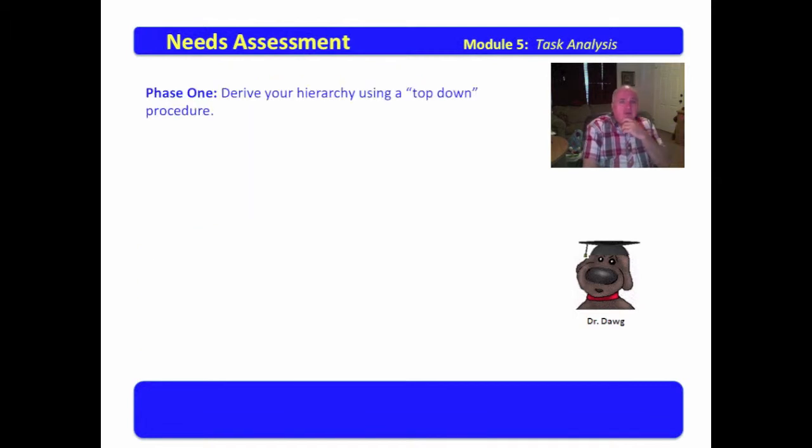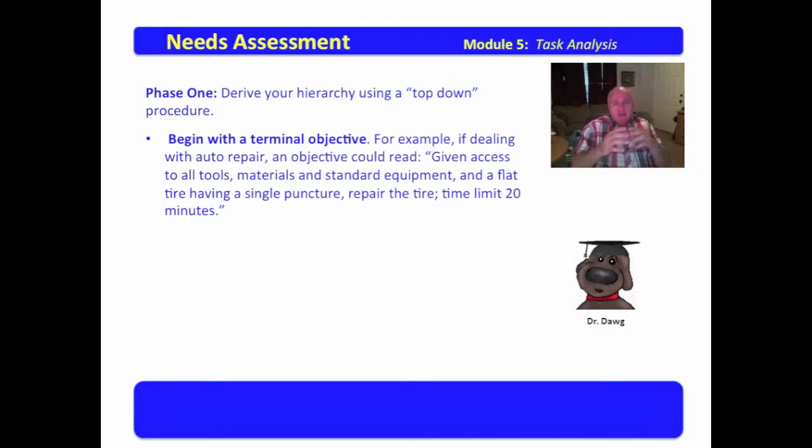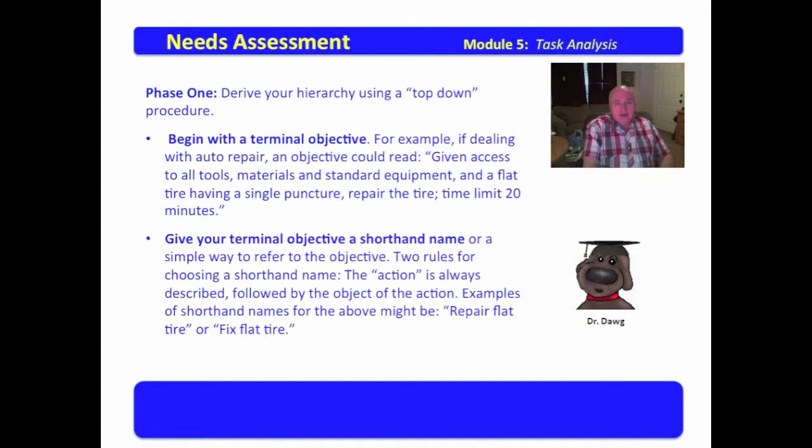A plan for developing a skill hierarchy follows. Now, phase one, derive your hierarchy using a top-down procedure. Begin with a terminal objective. What is the end objective? For example, if dealing with auto repair, an objective could read, given access to all tools, materials, and standard equipment in a flat tire having a single puncture, repair the tire, time limit 20 minutes.